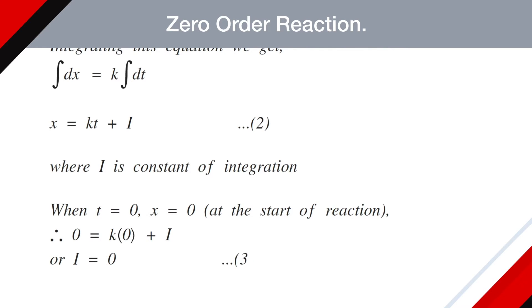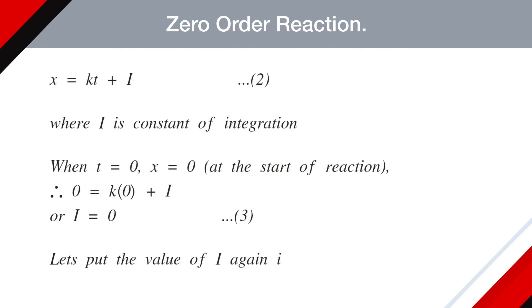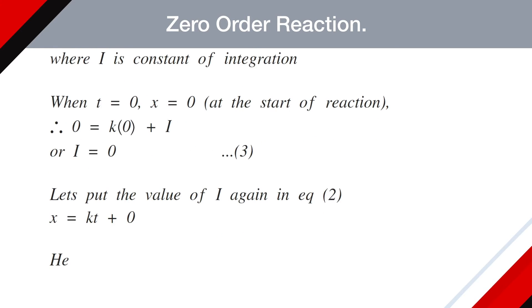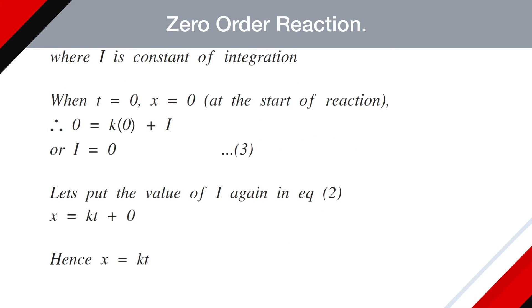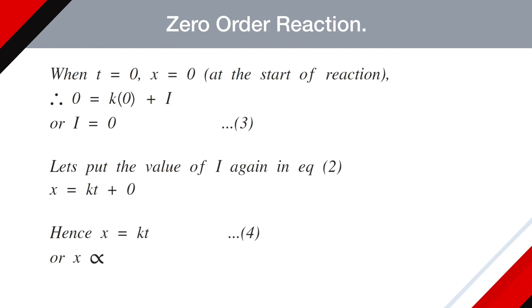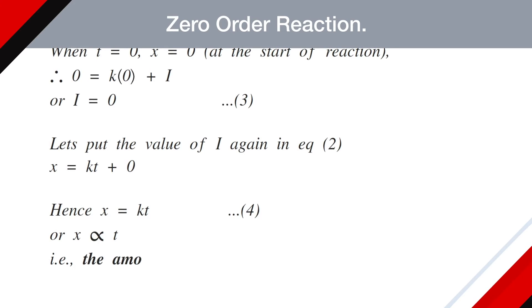Let's put the value of I again in equation number two. So X becomes KT plus zero. Hence X equals KT. This is equation number four. Or we can say X is proportional to T time. That is, the amount of substance reacted is proportional to time.